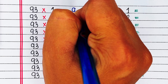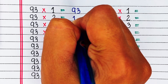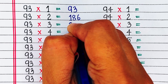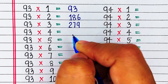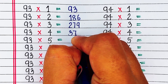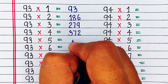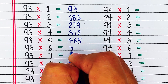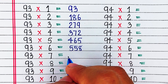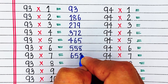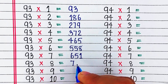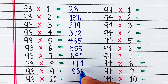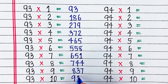Next is table of 93. 93 ones are 93. 93 twos are 186. 93 threes are 279. 93 fours are 372. 93 fives are 465. 93 sixes are 555. 93 sevens are 651. 93 eights are 744. 93 nines are 837. 93 tens are 930.